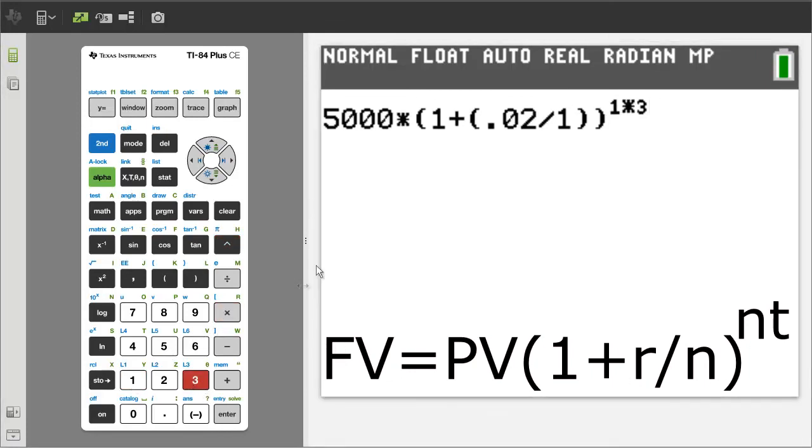Now enter 1 times 3. To get out of the power sign, press the right arrow button here. Now for the answer, press the enter button.